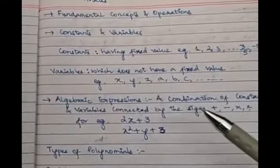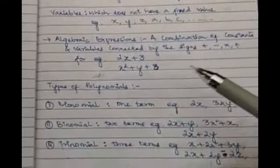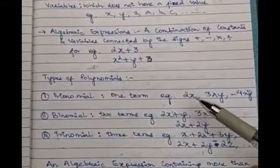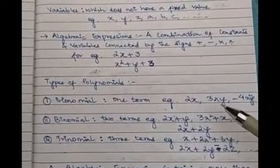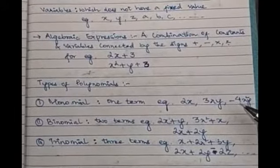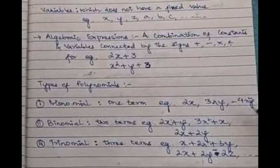Similarly, x squared plus y plus 3 — variables and constant terms connected with a positive sign — is a simple algebraic expression. Moving on to types of polynomials: first, monomial. Monomial means just one term. Mono means one. Examples: 2x, 3xy, minus 4x²y. No matter how many variables or whether it's positive or negative, a single term is a monomial.